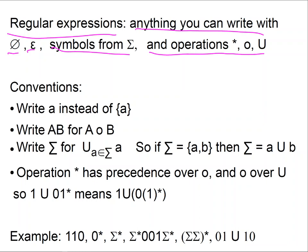Our conventions: we're going to write just a symbol 'a' instead of the set containing 'a'. We're going to write simply 'ab' for the concatenation of a and b. And we're going to write sigma for the union of the a's where a is in sigma. So for example if sigma is {a, b}, then sigma will also be the regular expression a union b.